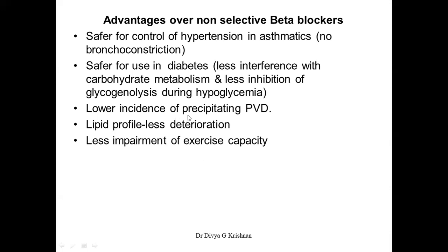There are lower incidences of precipitating peripheral vascular disease, less deterioration of the lipid profile, and less impairment of exercise capacity with their use, because all these conditions occur because of beta-2 receptor blockade — which is not happening with cardioselective beta blockers. So we have an advantage over non-selective beta blockers in these conditions. If a hypertensive patient has PVD, you can go for a cardioselective beta blocker, just as you can use them in hypertensive patients who also have concurrent asthma.